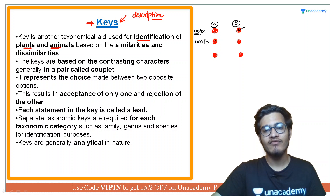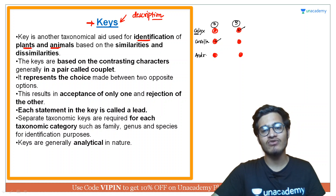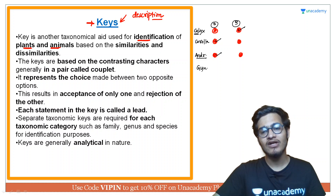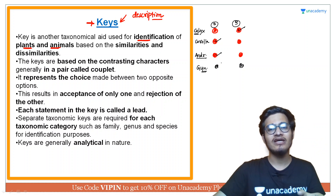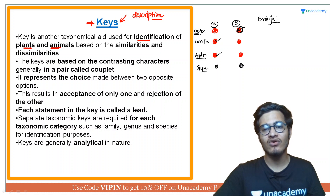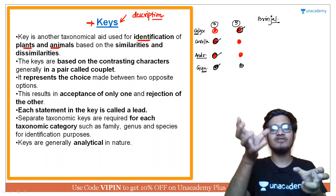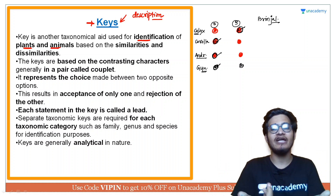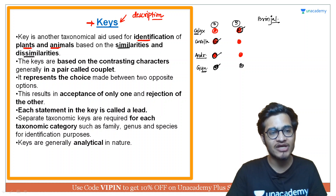Then आप corolla के बारे में पढ़ेंगे और option click कर देंगे. फिर androsium यानि male sexual organs के बारे में — कितने number में हैं, उनका size क्या है. Then gynosium के बारे में — ovaries कितनी हैं, उनकी arrangement क्या है. इस तरीके से सारे characters की एक list बना सकते हैं. जैसे brinjal के सारे specific characters लिखे, तो calyx, corolla, androsium, gynosium — सब कुछ पता लग जाएगा. So whenever I open the list of a particular species, मुझे contrastingly पता लग जाएगा कि इस plant में कौन-कौन से characters हैं और कौन-कौन से नहीं हैं. So keys similarities और dissimilarities पर based होती हैं.